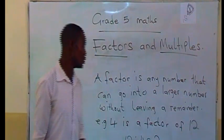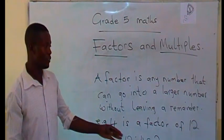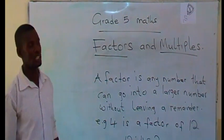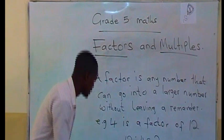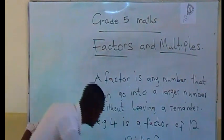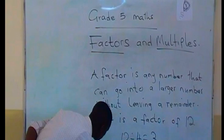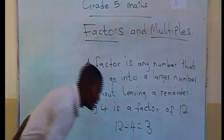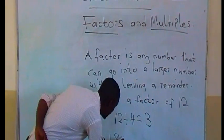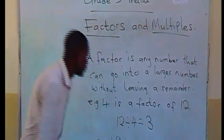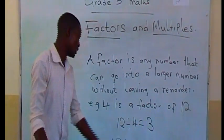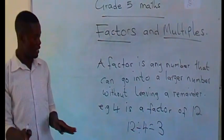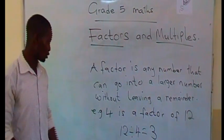If they ask you to list some factors of a given number, they give you the number and ask you to list some factors. For example, list at least two or three factors of 18. You think of the numbers that can go into 18 without leaving a remainder — those are what we call factors of 18.